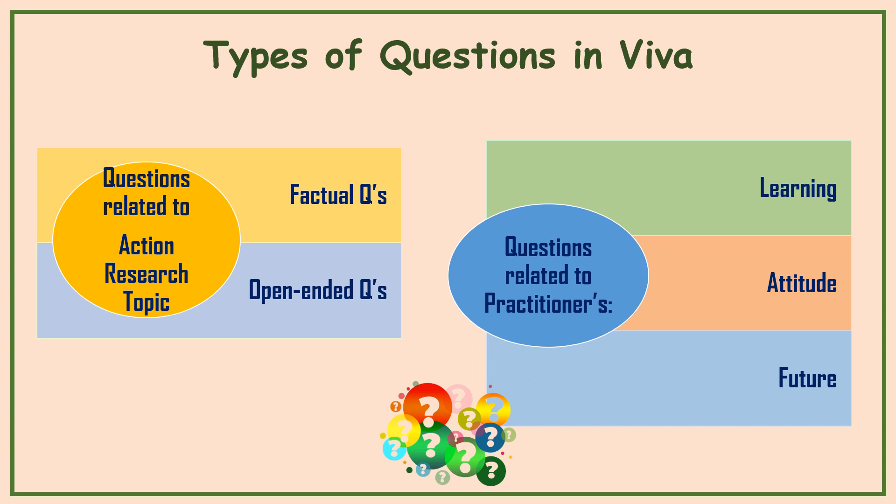The second type is questions related to the practitioner's learning — what learning you gained as a practitioner, as a student teacher. Also, questions related to attitudinal change, your behavior towards the study or the topic chosen, and questions related to the future aspect — how you will utilize this action research as a teacher in the future.